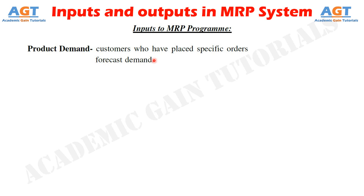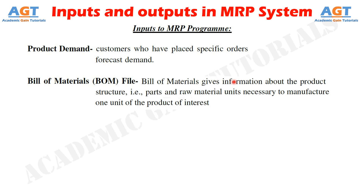Input number two is the Bill of Materials, or BOM file. The BOM file is a document which tells us about an item's product structure, the sequence in which components are assembled, their required number, and the workstations in which they are assembled. The Bill of Materials gives information about parts and raw material units necessary to manufacture one unit of the product of interest.